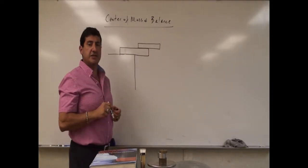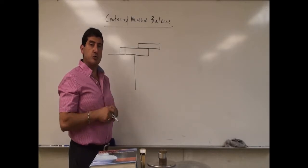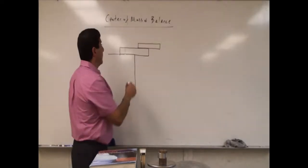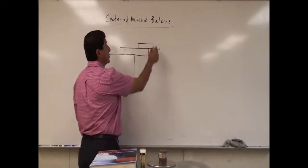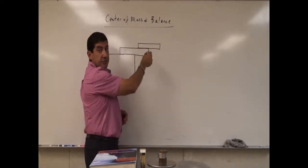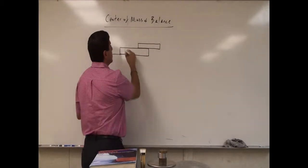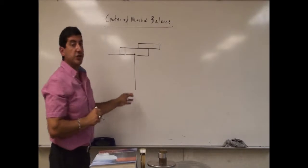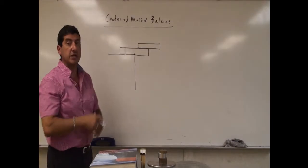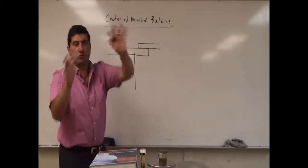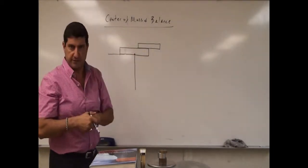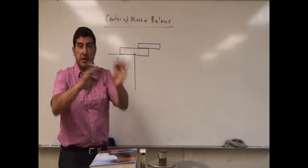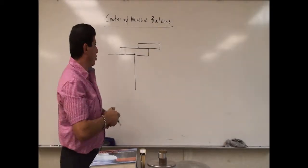The idea is that in order to be able to do this kind of problem, we have to know what the center of mass of the system is. Once the center of mass of the system is right over the edge of the table, the system will topple over — it's going to become a point of unstable equilibrium and it will topple over.